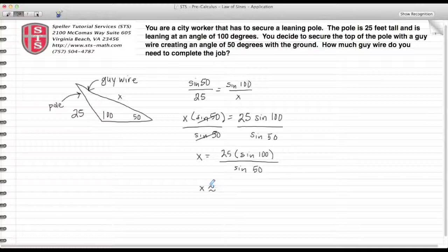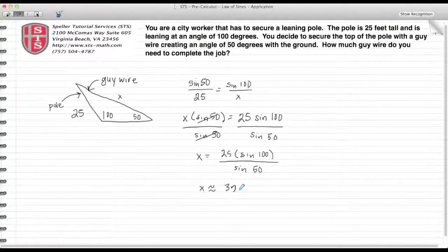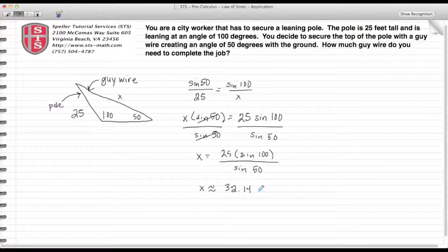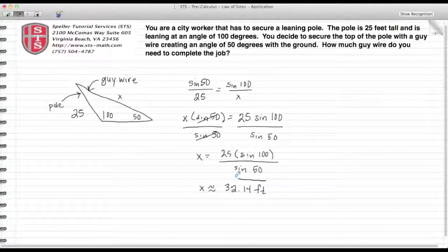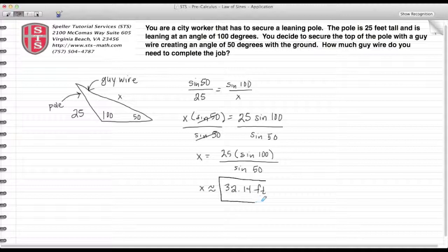When I evaluate that, we find out that X is approximately 32.14 feet. So that's how much guy wire we need to make sure that we have on the truck before we start this job to secure that pole.